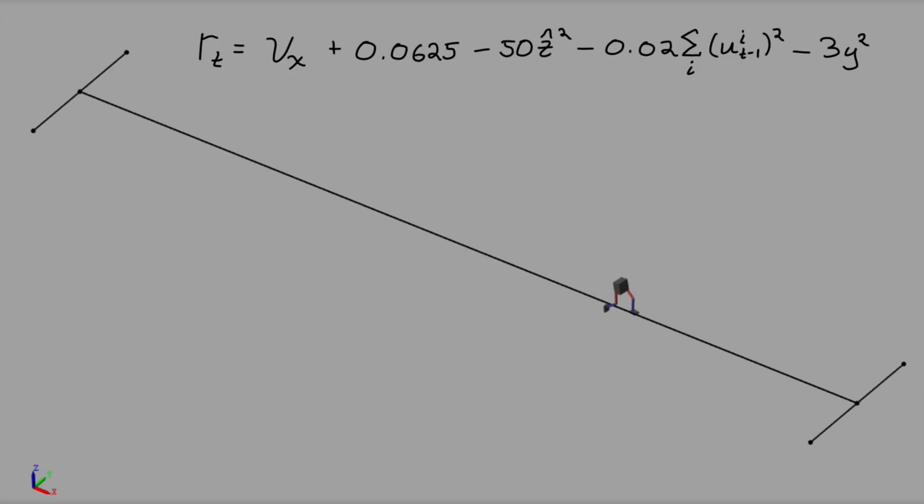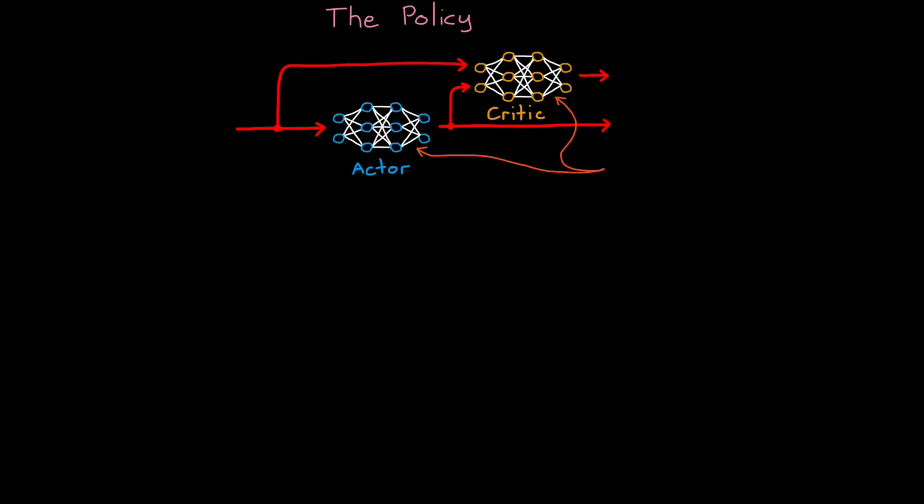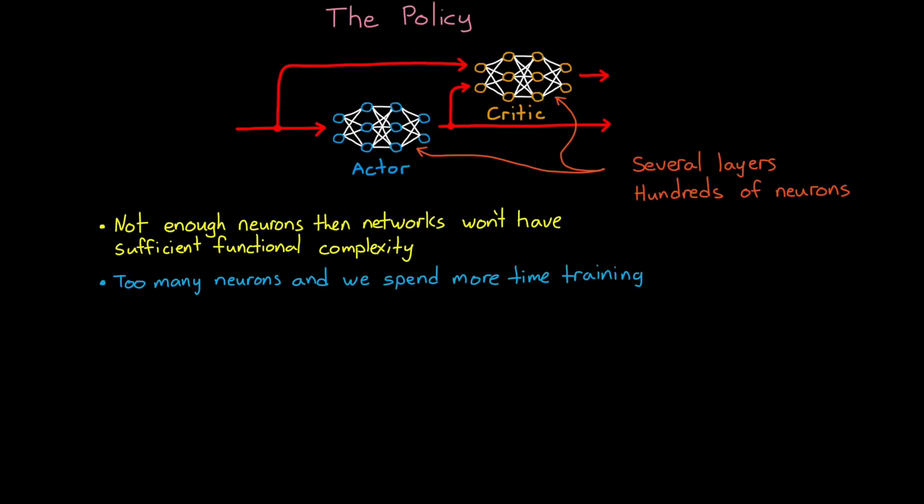So with the reward function set, let's move on to the policy. I've already stated that the policy is an actor neural network, and along with it is a critic neural network. And each of these networks have several hidden layers of hundreds of neurons each, so there's a lot of calculations that go into them. If we don't have enough neurons, then the network will never be able to mimic the high dimensional function that is required to map the 31 observations to the six actions for this non-linear environment. On the other hand, too many neurons and we spend more time training the excessive logic. In addition, the architecture of the network is really important in functional complexity. These are things like the number of layers and how they're connected, and the number of neurons in each layer. So there is some experience and knowledge needed to find that sweet spot that makes training possible and efficient.